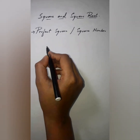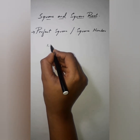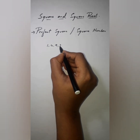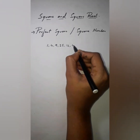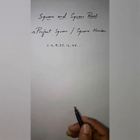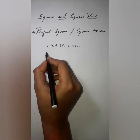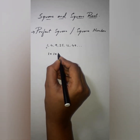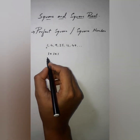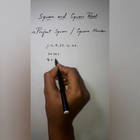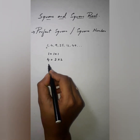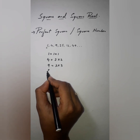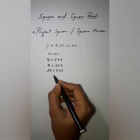Before going to the topic, let us find out the specialty about numbers like 1, 4, 9, 16, 25, 49, and so on. If you observe these numbers, we can say that 1 can be written as 1×1, 4 as 2×2, 9 as 3×3, and 25 as 5×5.